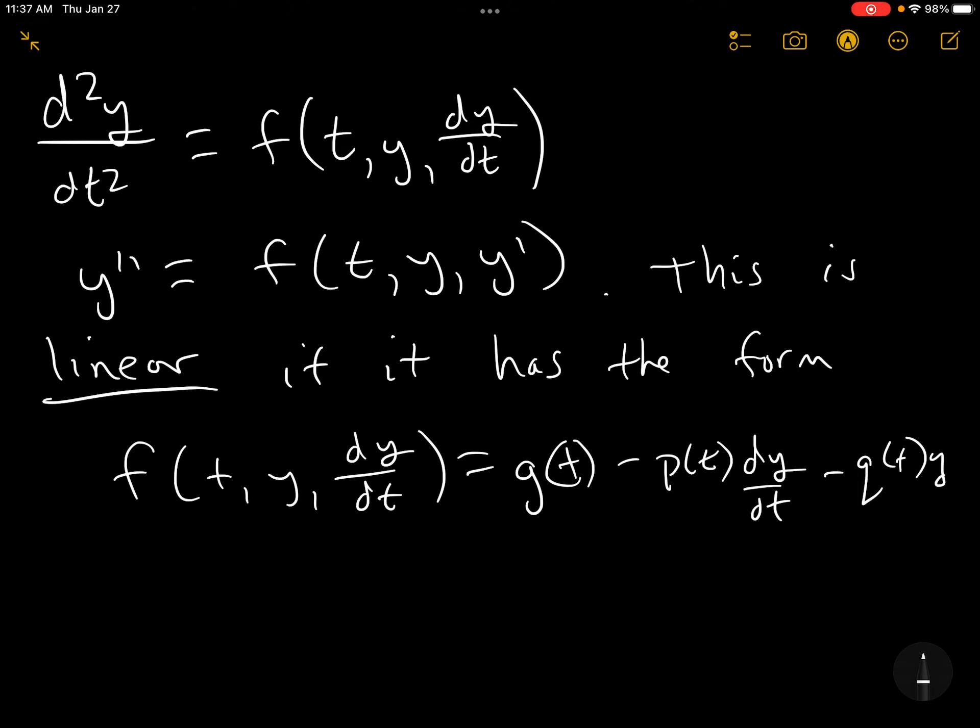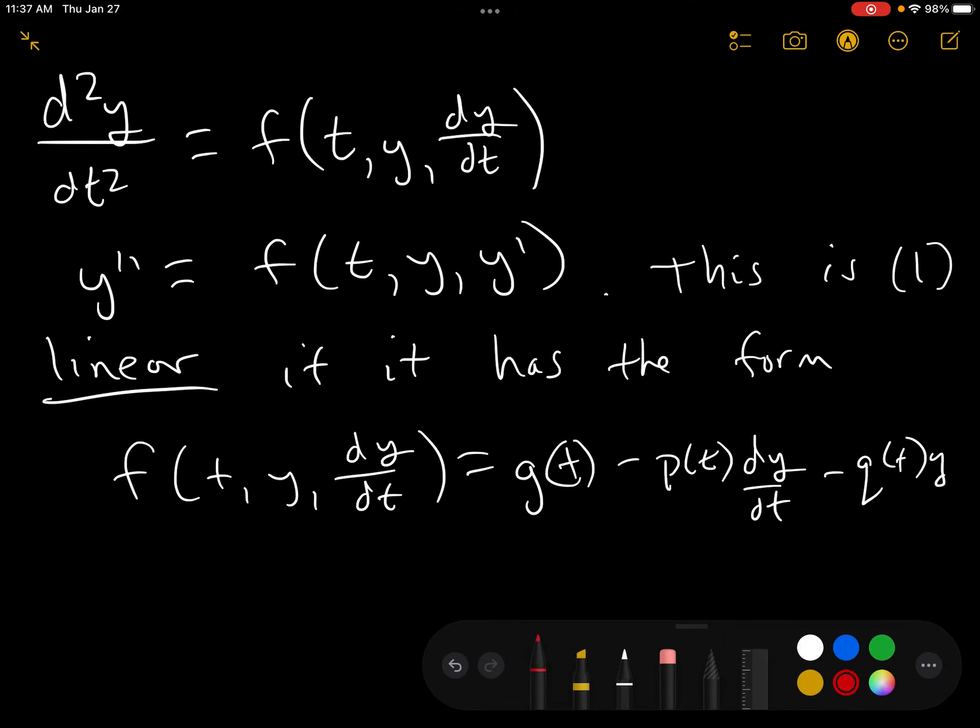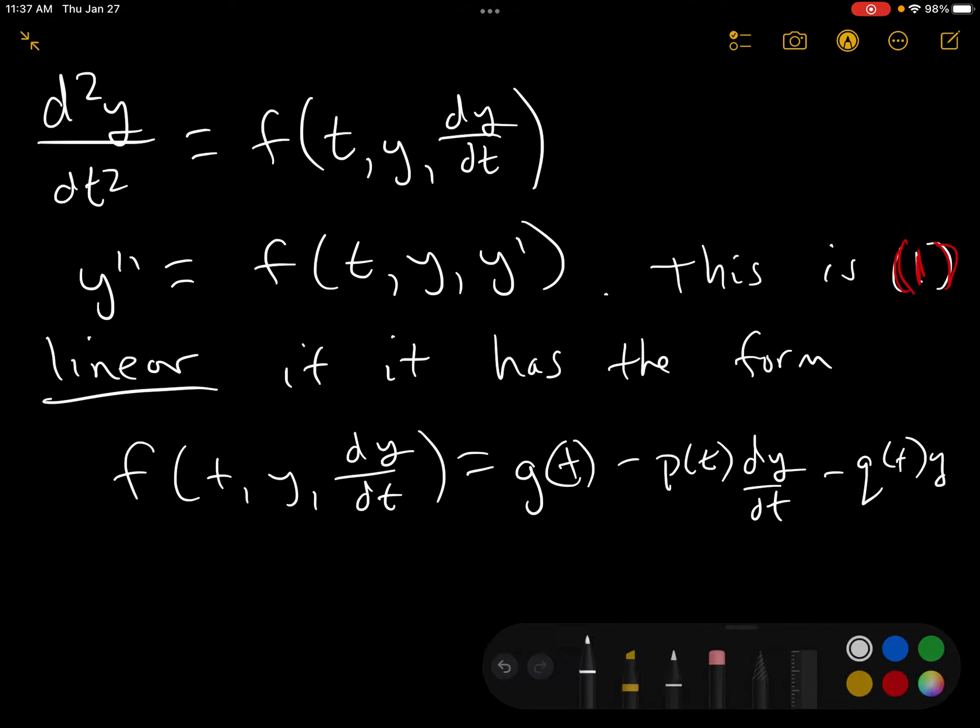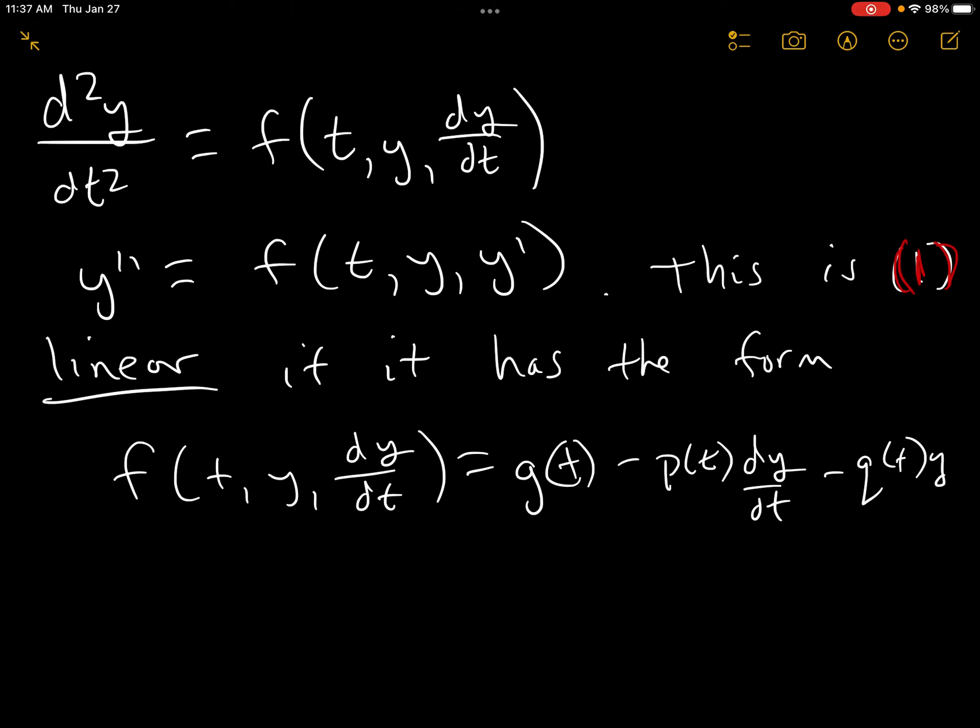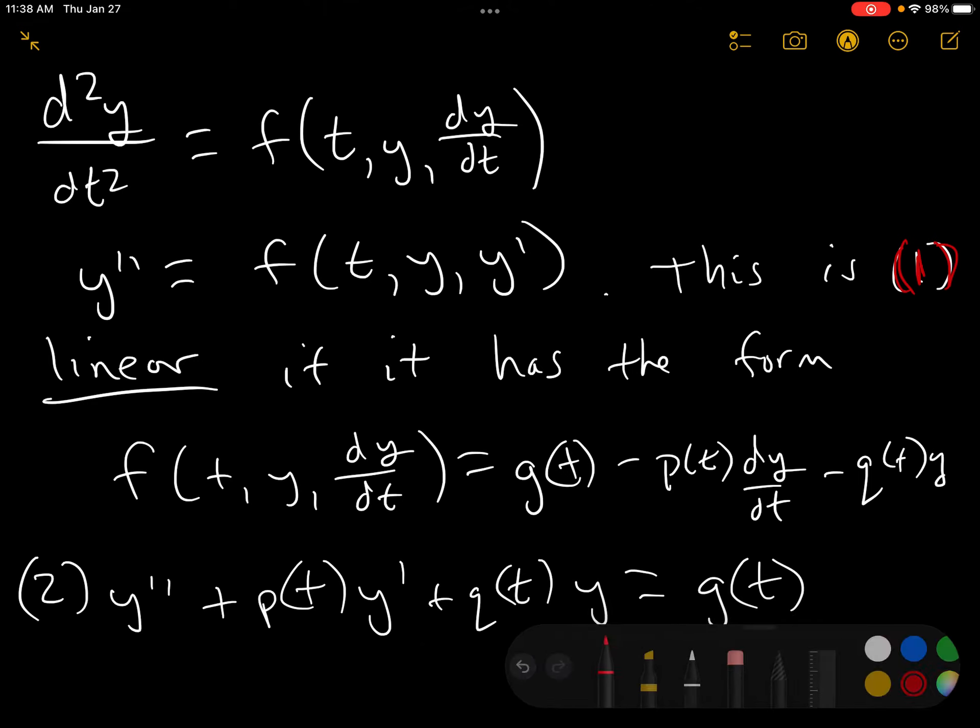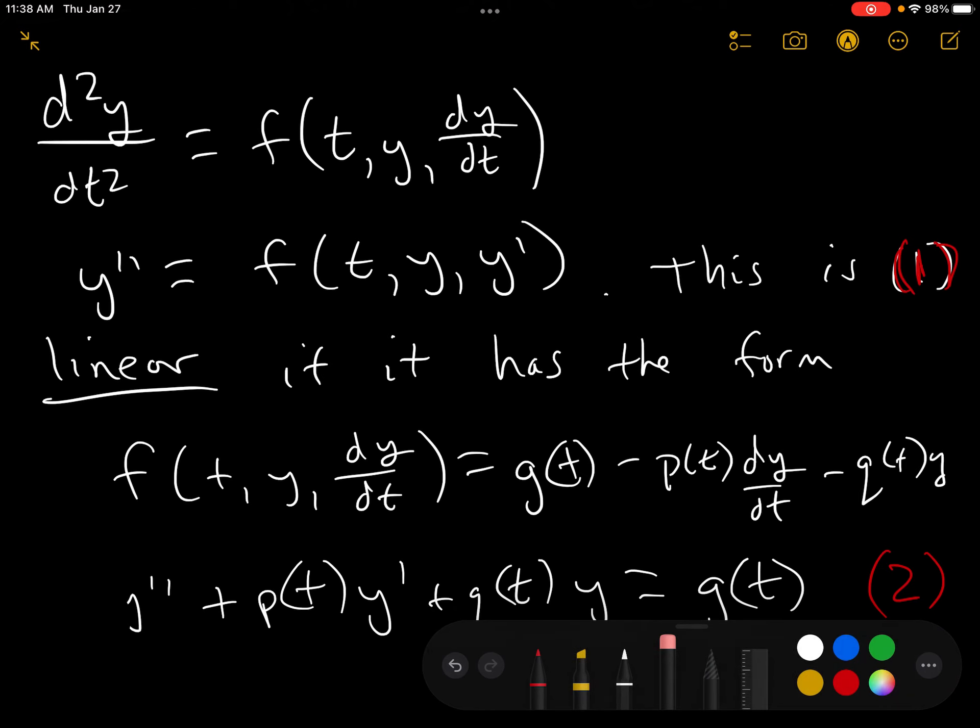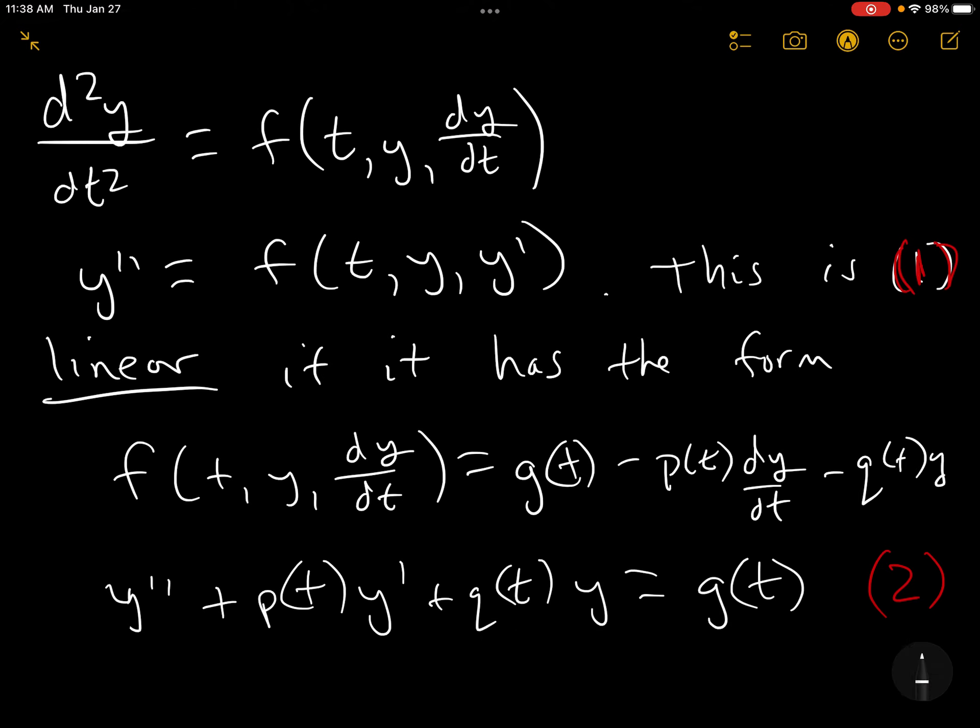This is not a very fun form to work with, this equation one, I'm going to call it. It's the basic form. You can also write it like this: Y double prime plus P sub T, Y prime plus Q sub T, Y equals G sub T. And this looks very familiar to us. I should have my equation numbering on the side here.